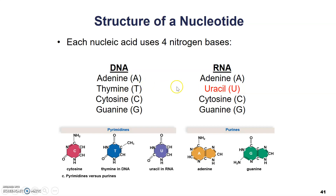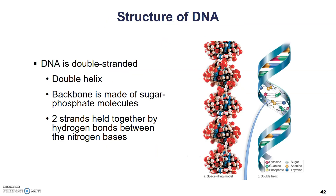This is another difference between the two nucleic acids. Looking at the structure of the nucleic acids as whole molecules, we start with DNA. DNA is a double-stranded molecule, meaning it has two strands that come together to form a twisted ladder structure called the double helix, shown here on the right. The backbone, or the sides of this ladder, are made up of the sugars and phosphates of the nucleotides.